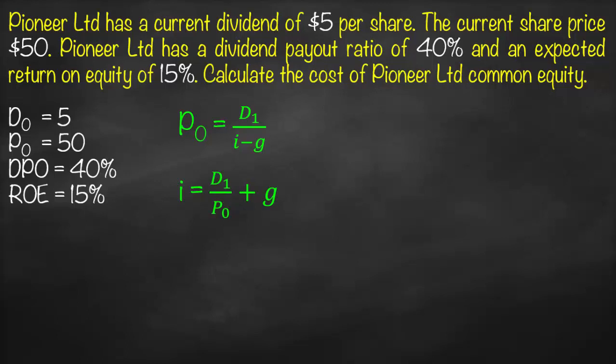In the question we don't have D1, we have D0. We can calculate the dividend at year one from the dividend at year zero. The dividend in year one equals the dividend at year zero multiplied by (1 plus g), divided by P0, plus g.